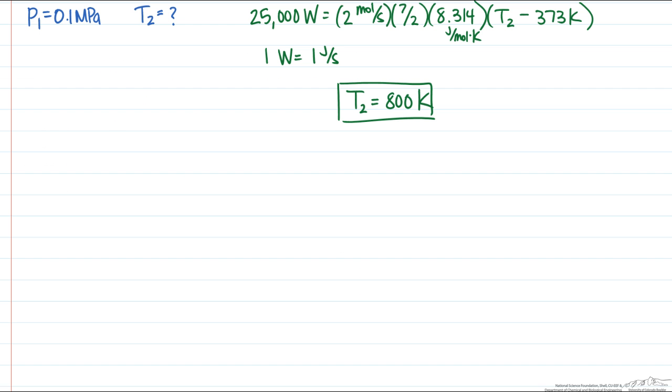Now in part B we want to determine the efficiency of this compressor compared to an ideal compressor. And an ideal compressor is reversible. And that means that it's an isentropic compression. So that delta S for the fluid going through the compressor is equal to 0.